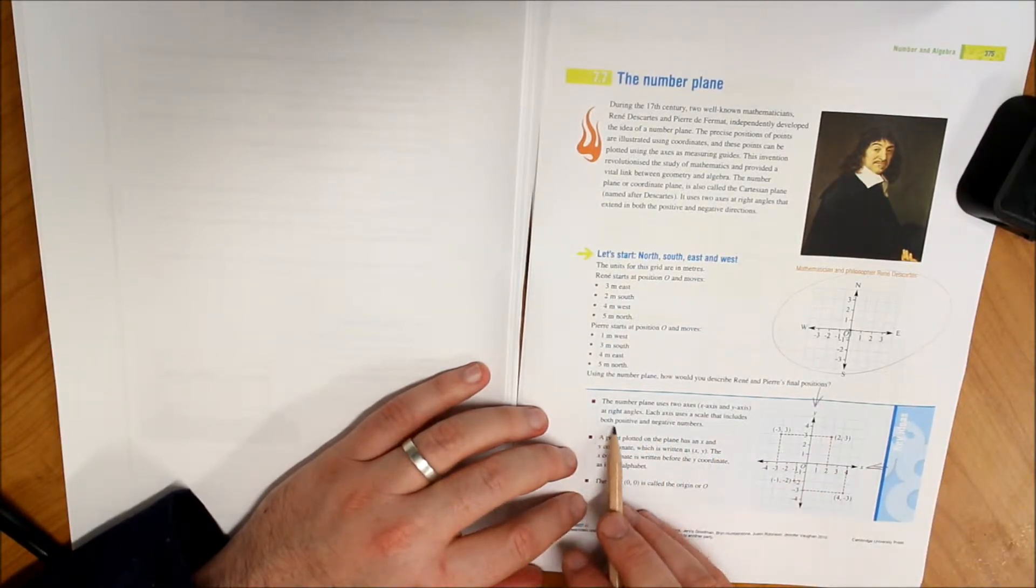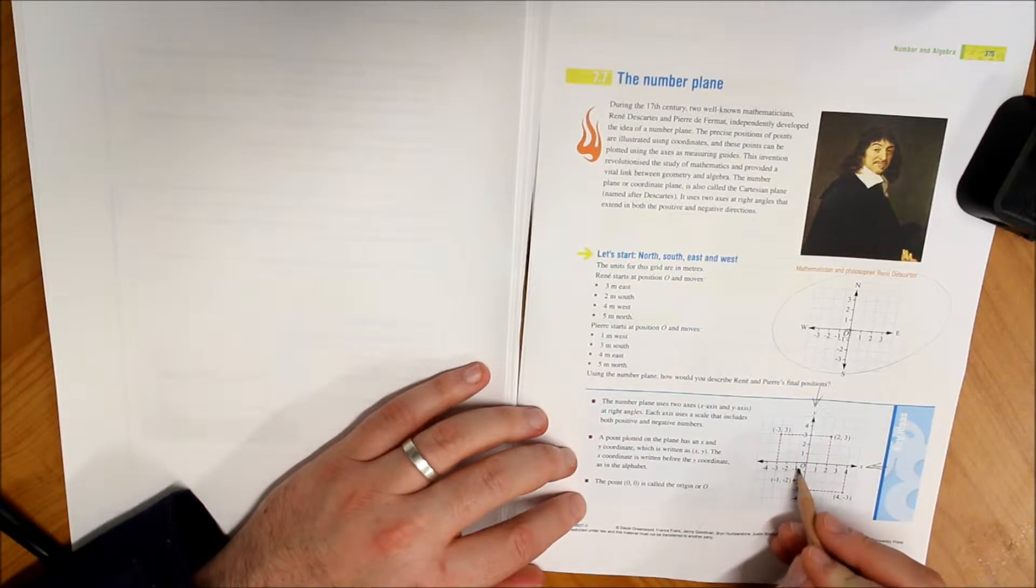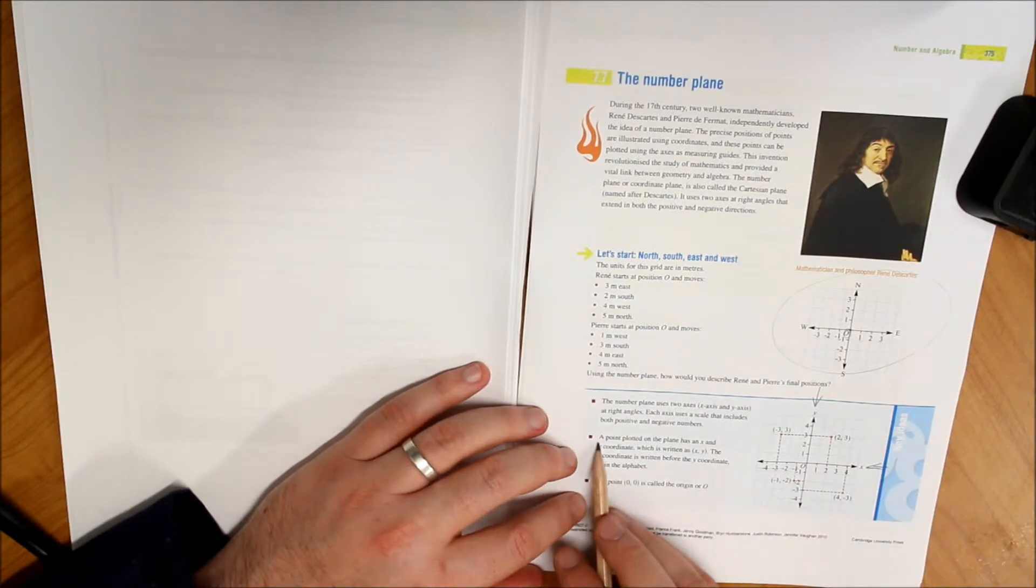Each axis uses a scale that includes both positive and negative numbers. Okay, so on your x-axis you've got positives and also your negatives. On your y, you've got positives and also negatives.